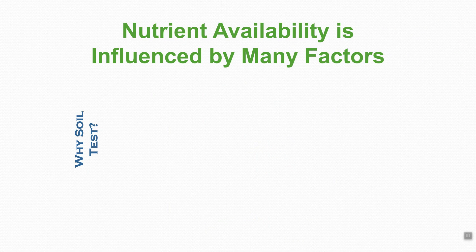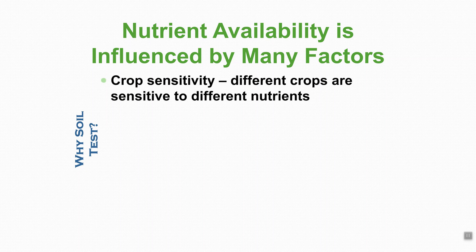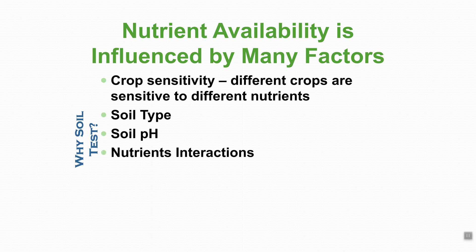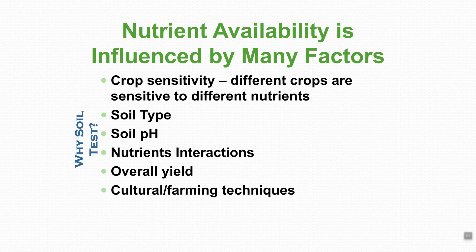There are a lot of influences that affect your nutrient availability. Crop sensitivity is one of them — different crops are sensitive to different nutrients available in that soil. Your soil type will influence your nutrients, so pH is a given. There are nutrient interactions that will affect that, and overall yield expectation of the crop you are growing. Cultural practices — whether you're no-till, strip till, or full tillage — will also affect nutrient availability.